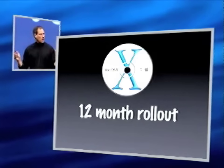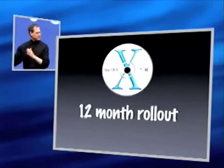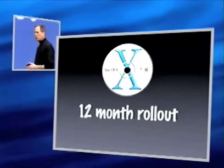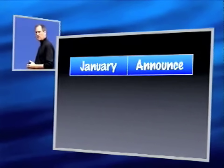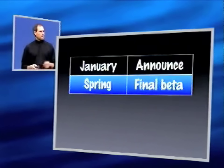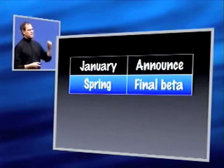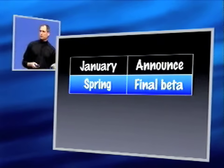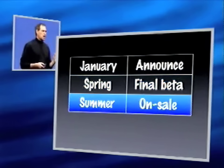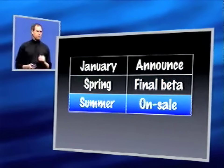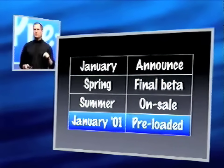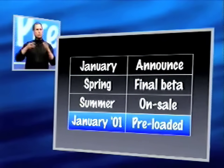There's going to be a 12-month rollout of Mac OS X. You can't do these things overnight. We are announcing it today, January 2000. Our developers have already had a few betas of the software. They're going to get another pre-release at the end of this month. The final beta will go out to developers this spring. Mac OS X will be on sale as a software product starting this summer, and we will be pre-loading it on all machines a year from now. That is our rollout strategy.